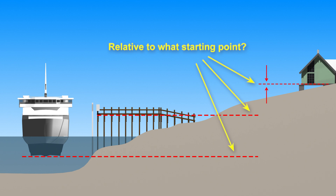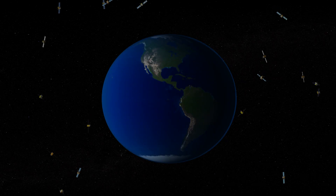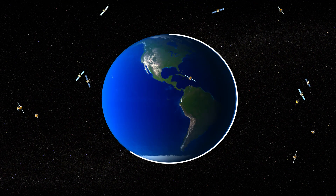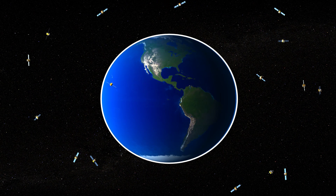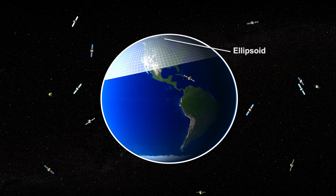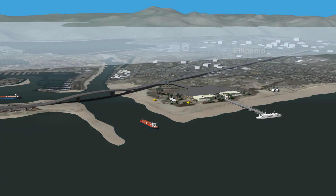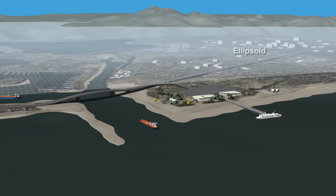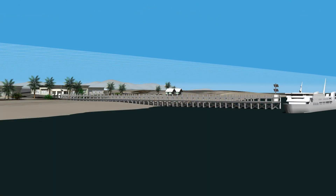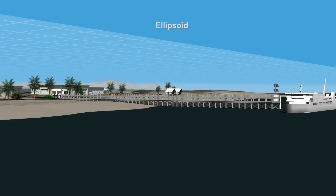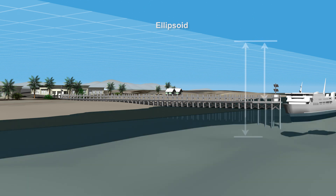The most commonly used reference surface, or datum, is an ellipsoid — an idealized representation of Earth's shape. Because Earth is not smooth, the ellipsoid may lie above or below Earth's surface at any given location. The ellipsoid is the basis for satellite navigation systems, such as the U.S. Global Positioning System, or GPS. LIDAR and sonar data tells us that our pier is 35 meters below the ellipsoid, and the seafloor is 50 meters below the ellipsoid.